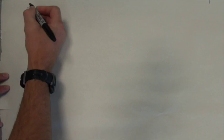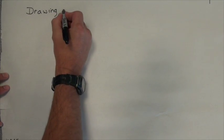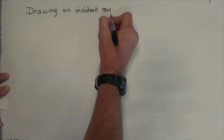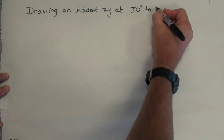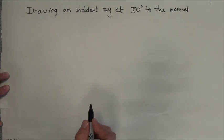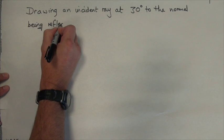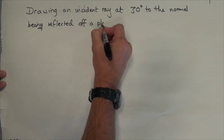In this video we're going to be drawing a ray diagram for a plane mirror. Let's set up a scenario. We're taking an incident ray and drawing it at 30 degrees to the normal, and then drawing the reflected ray which bounces off that plane mirror.